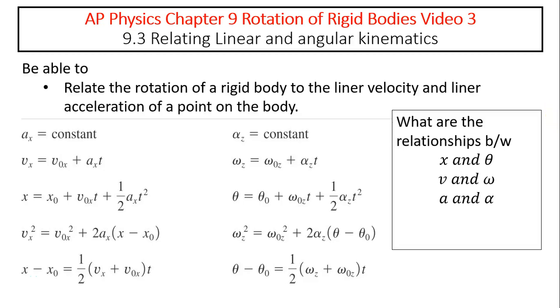Hi, this is Mrs. LaBarbera. This is AP Physics, Chapter 9, Rotation of Rigid Bodies, Video 3. Today's topic is relating linear and angular kinematics. Today's objective is to be able to relate the rotation of a rigid body to the linear velocity and linear acceleration of a point on the body.